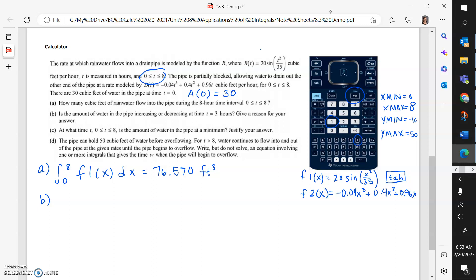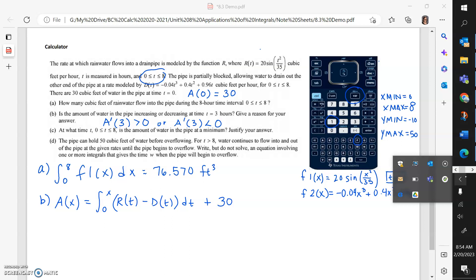Is the amount of water in the pipe increasing or decreasing at time 3? For this problem, I would like to know, is the derivative of the amount positive or negative? If I have to justify increasing or decreasing, I need to be talking about the derivative. I was not given an equation for the amount, so I have to make one using an accumulation function.